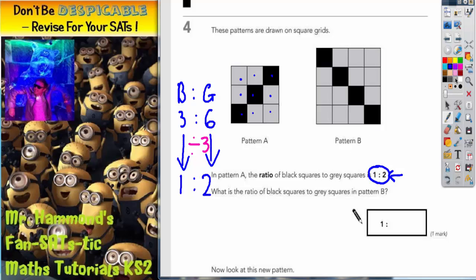Now we've got to do a similar sort of thing for pattern B. So we're being asked for black squares to grey squares, so we should be writing down black first, then grey. Very important to stick to the order that it's talking about in the question. Don't try and swap it around, otherwise your answer may be incorrect.